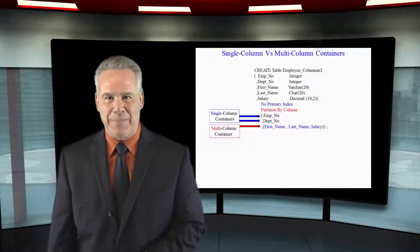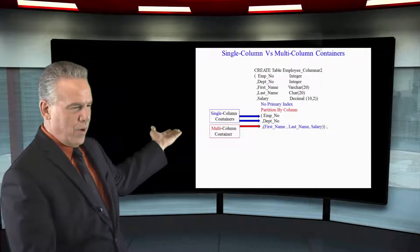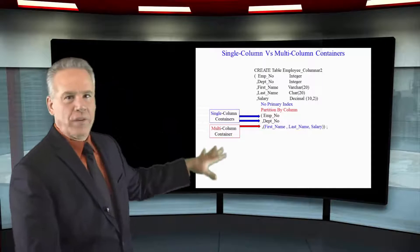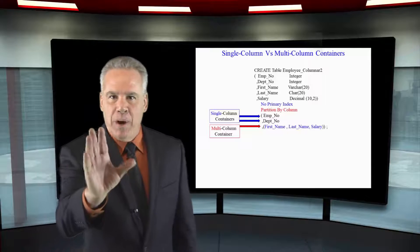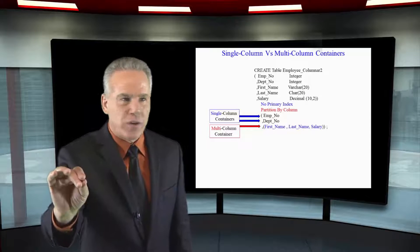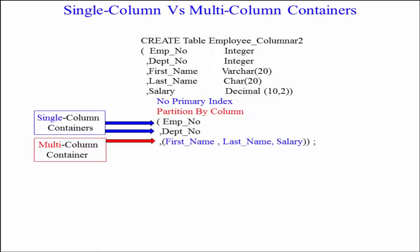Take a look at this CREATE statement. We're creating our table employee columnar 2. We've got all our columns in there, but it's an OPI. We know that's for columnar and it's partitioned by column, but I need you to see that EMPNO and DEPNO get their own containers.